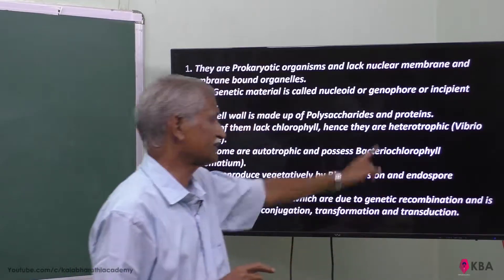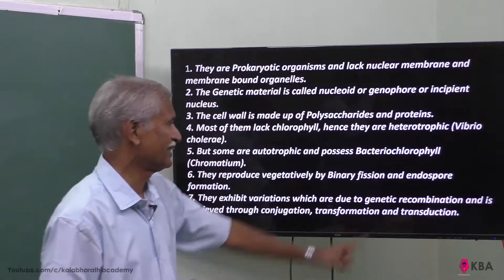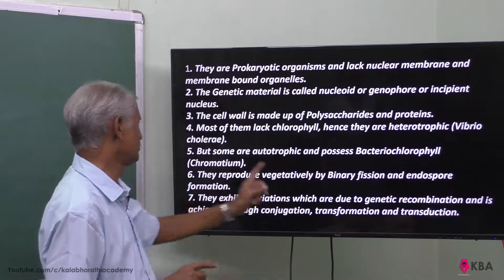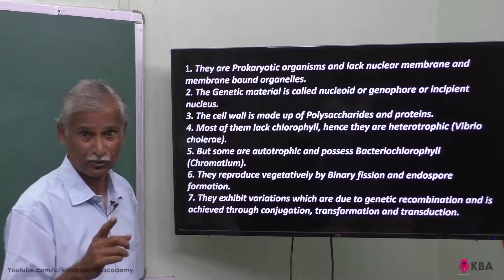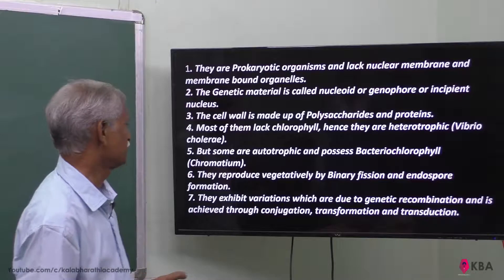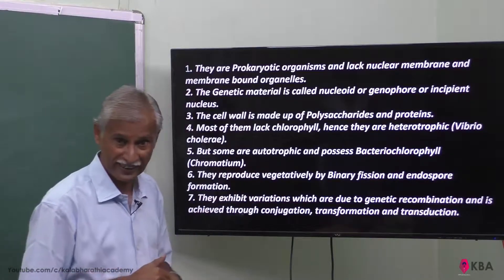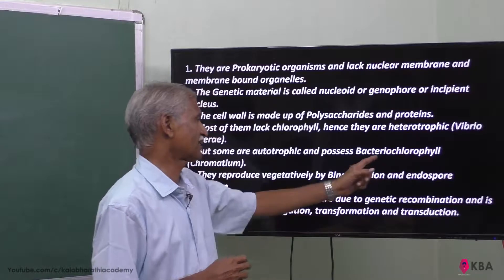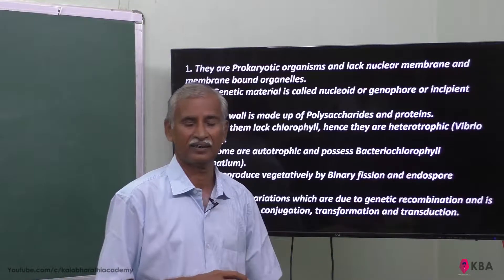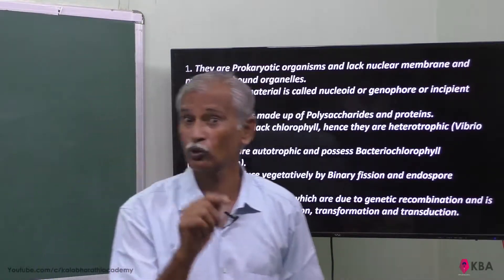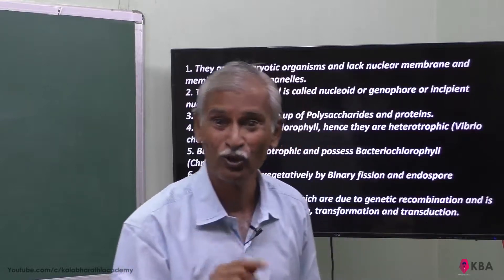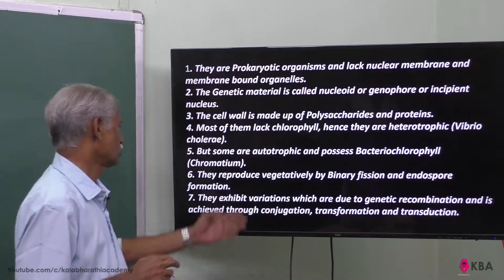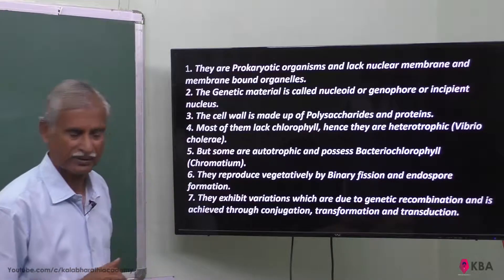Most bacteria are heterotrophs, but some are autotrophs. Certain bacteria contain a pigment called bacteriochlorophyll — the bacterial equivalent of chlorophyll. An example of such an autotrophic bacterium is Chromatium.